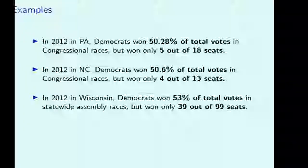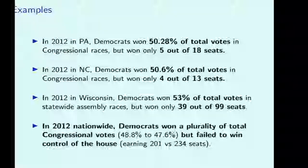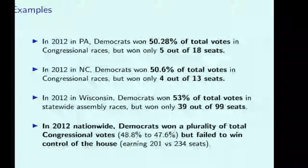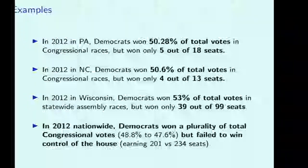2012 was a notable year overall because the Democrats actually won a plurality of the nationwide congressional vote — they won more votes than Republicans — but the final seat count had Republicans at 234 and Democrats at 201. So the Republicans had a strong majority of the seats even though the Democrats got more votes.